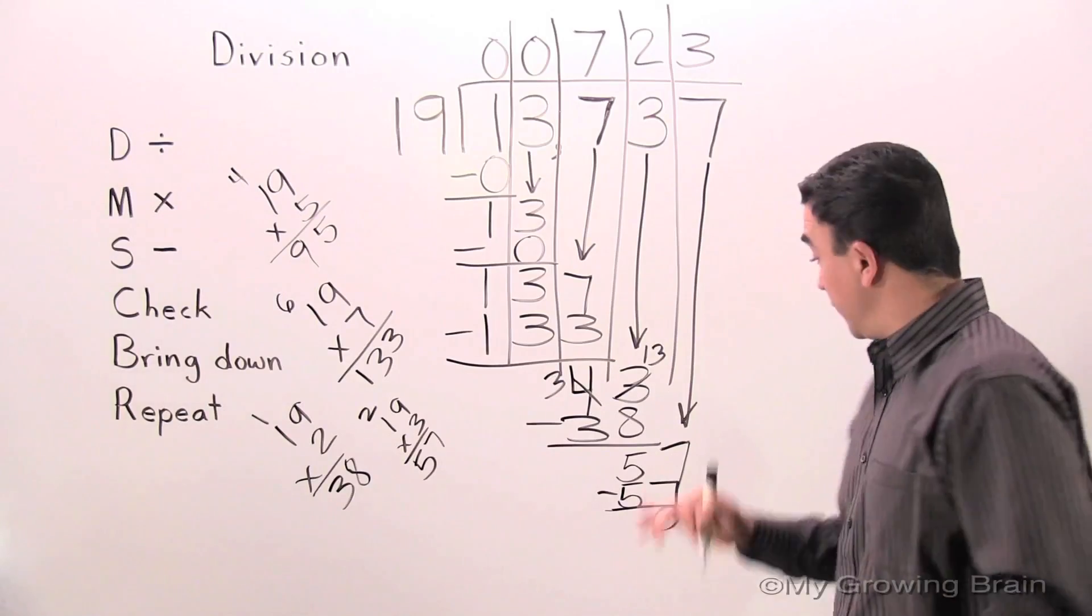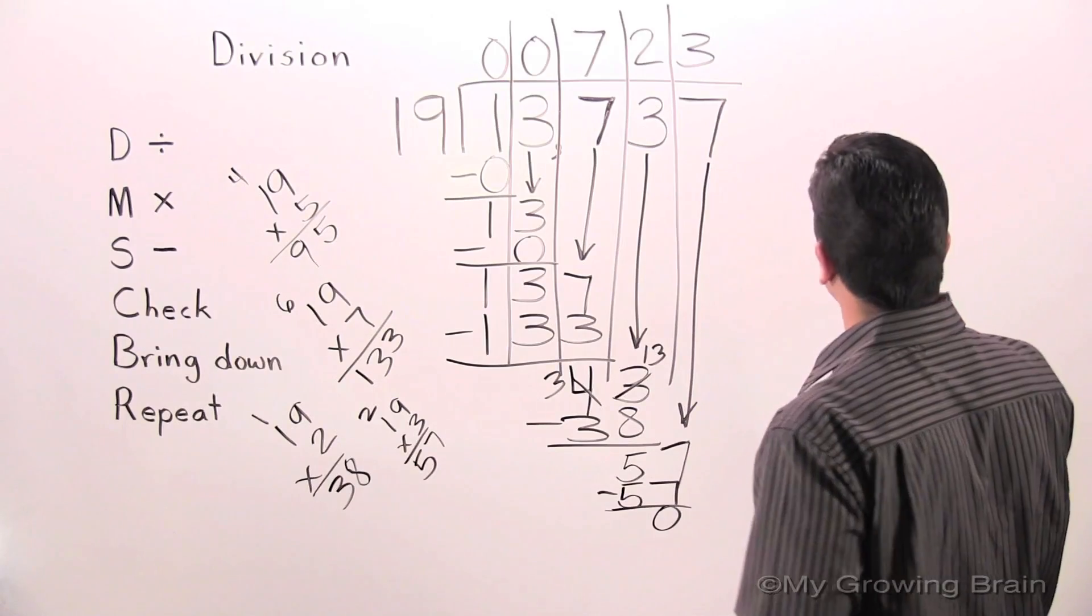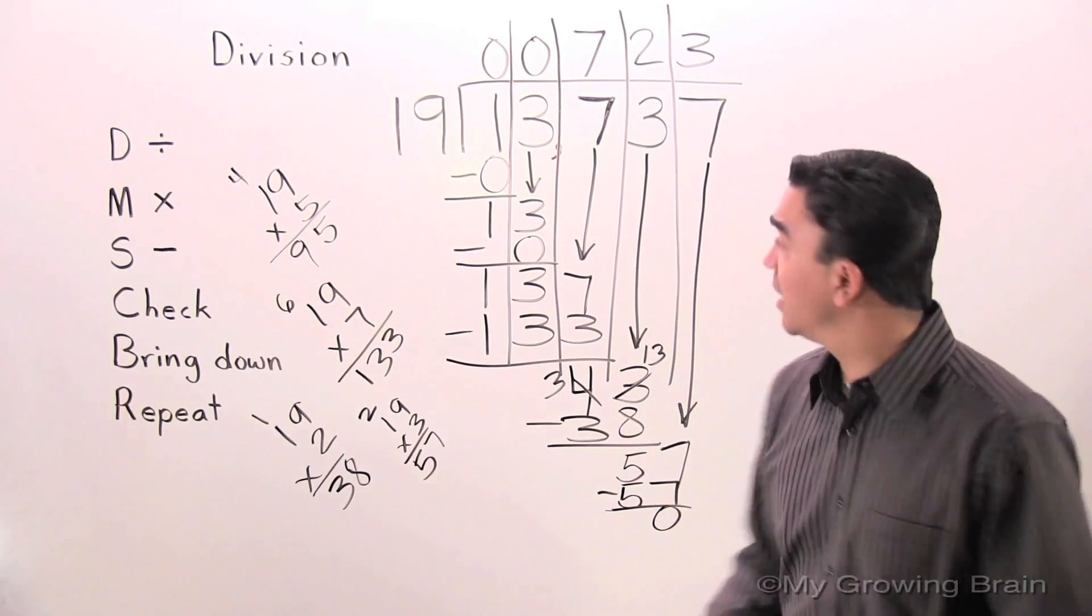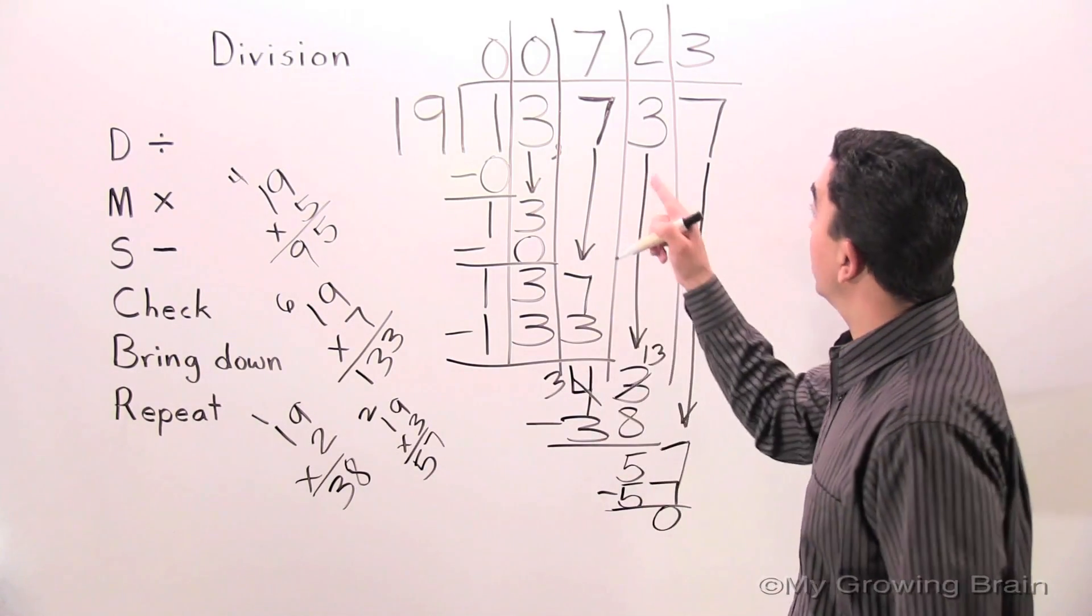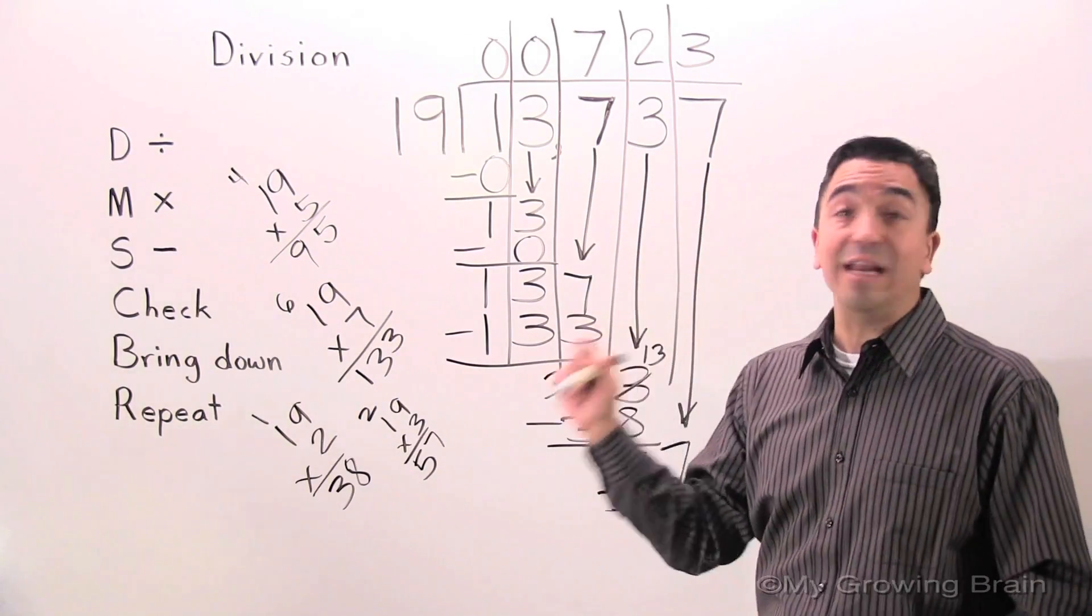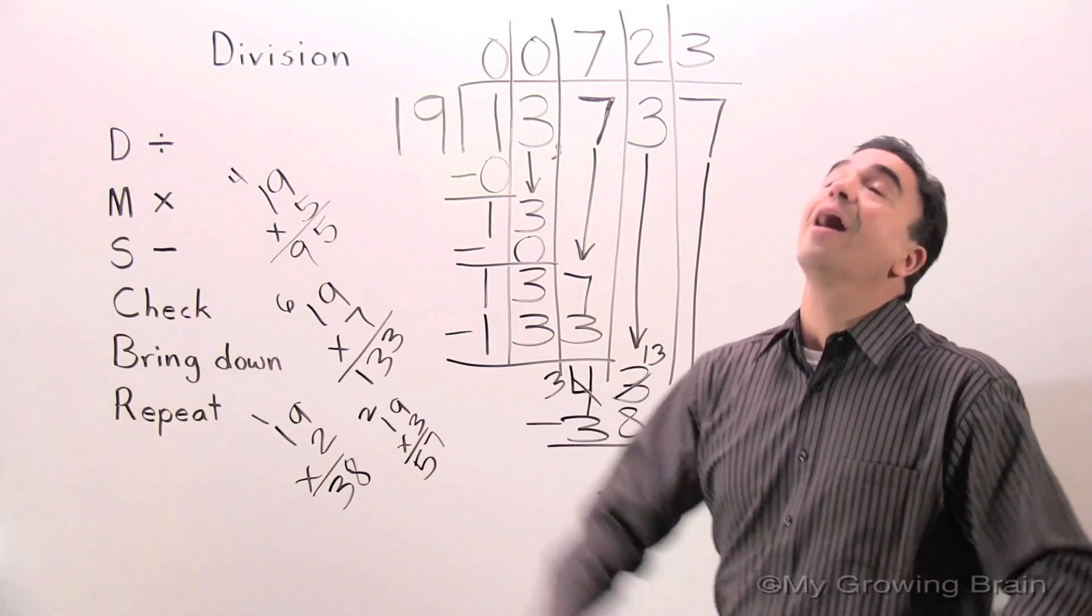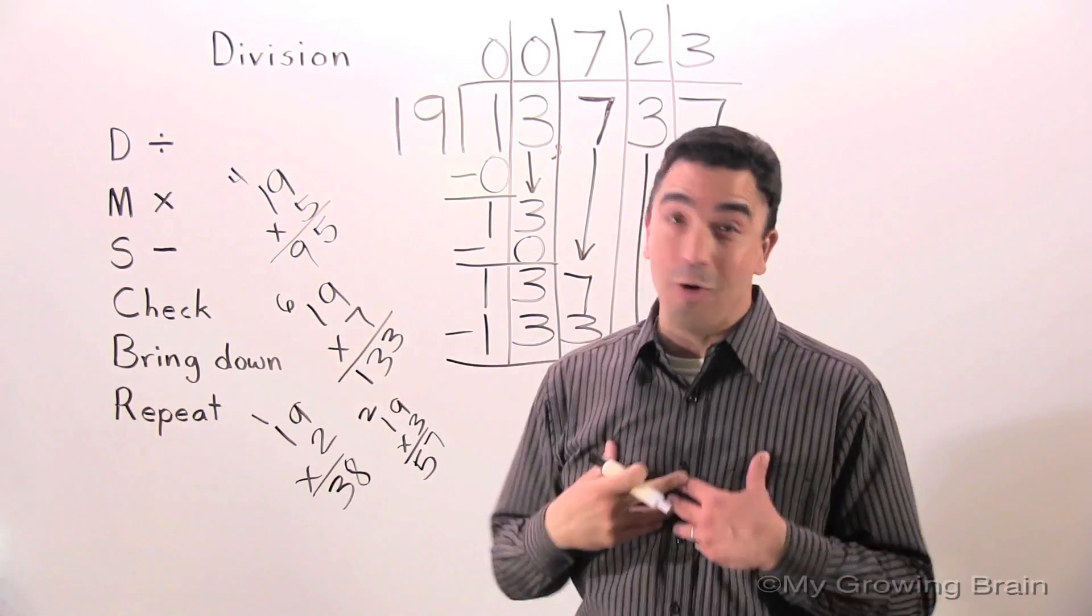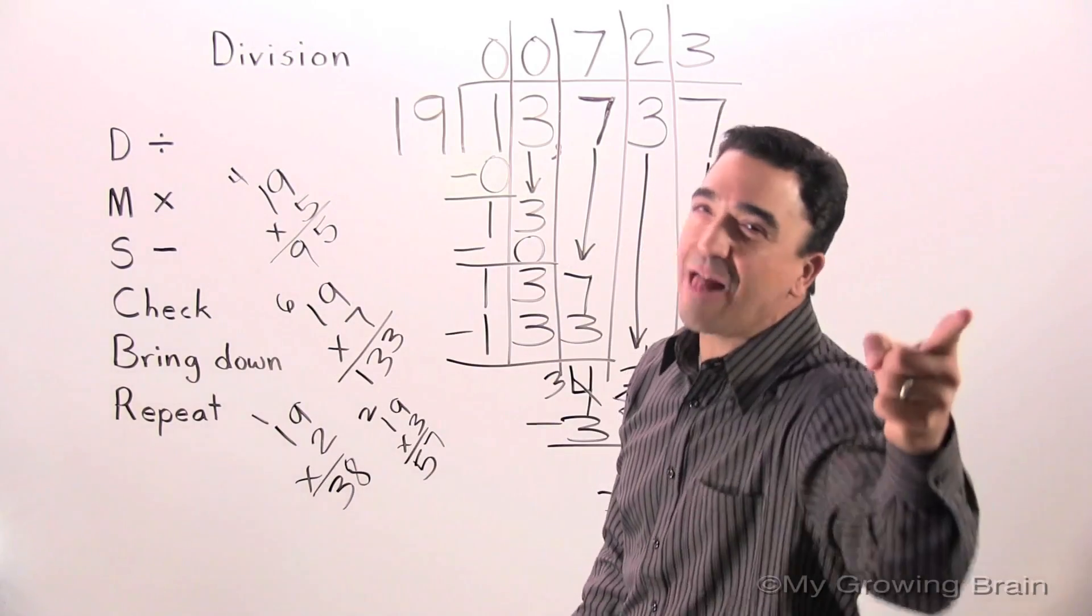Check. 0 is less than 19. Keep on going. Bring down. There's nothing to bring down. Therefore, 13,737 divided by 19 gives us a quotient of 723. That concludes our lesson on Division Coach Mike at My Growing Brain. Challenge yourself!